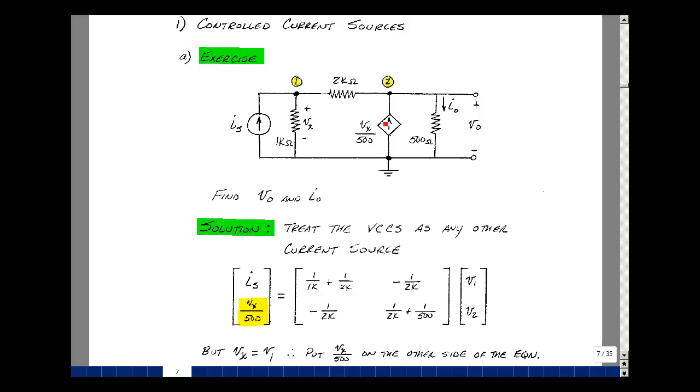The dependent current source is a current source. We can apply exactly the same algorithm. Set up the number of our unknown node voltages, in this case 2, a blank 2x2 matrix. What's going to go in here are our summation of conductances.